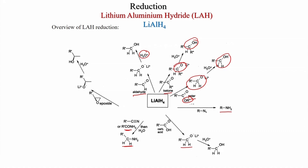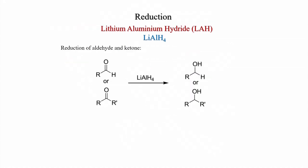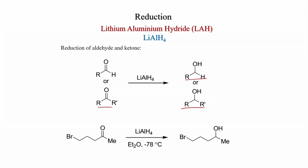Epoxides can be cleaved to alcohols; the hydride attacks at the less hindered face, giving alcohol at the secondary carbon. Reduction of aldehydes and ketones: LiAlH4 reduces them to the corresponding alcohols. For example, a ketone with a bromo substituent treated with LiAlH4/ether at −78°C gives the alcohol while the bromo substituent is untouched.